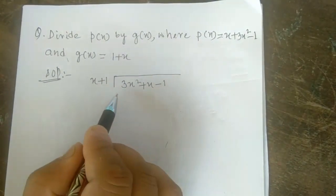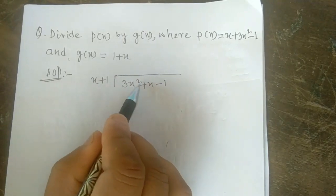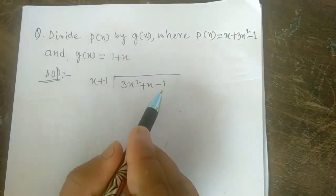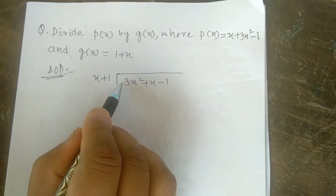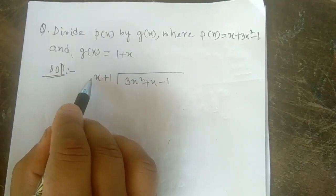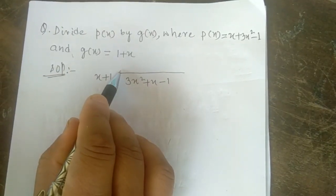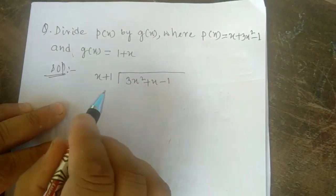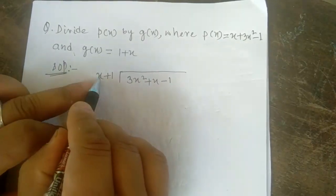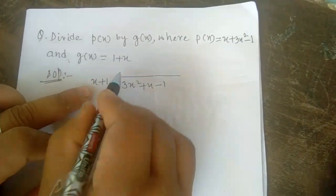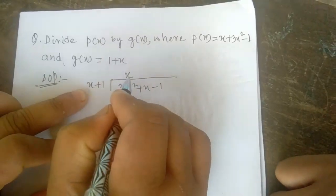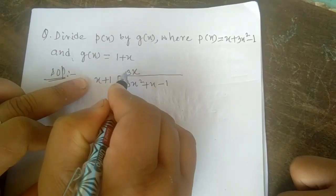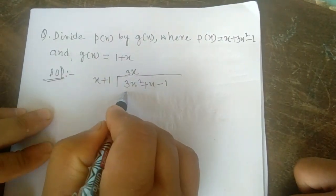How to divide: whenever you divide any polynomial by another polynomial, we have to see the first term and the first term only — no need to see the second and third terms. Before that, we check the sign. Here it is plus, here also plus, so plus into plus is plus. No sign means plus, so we don't put a plus sign here. How many x here? It is x², here only x, so x into x = x². We need one more x. Coefficient here is 1, here coefficient is 3, so we multiply by 3.